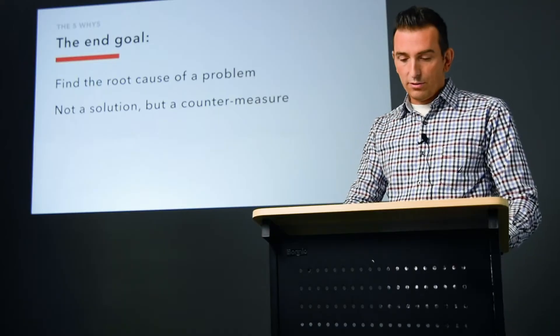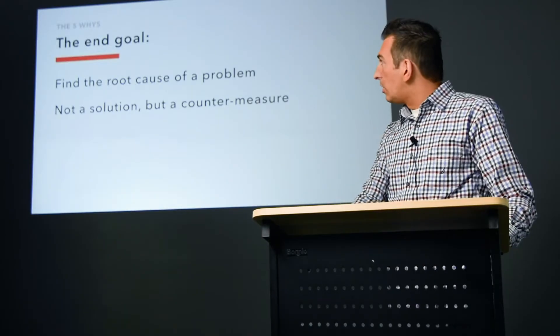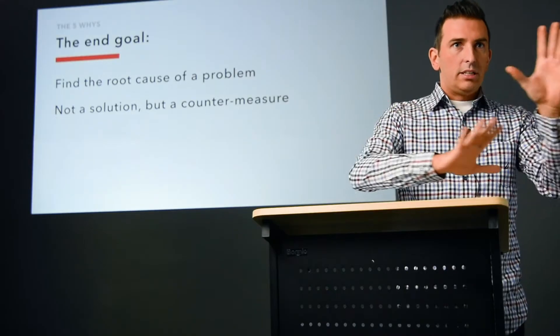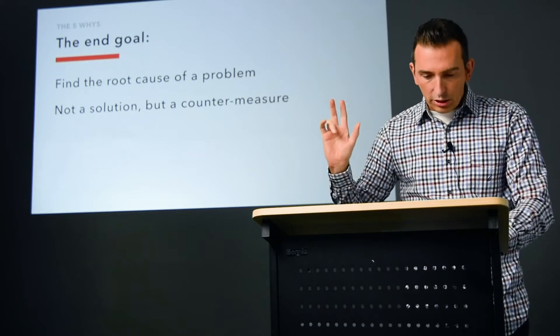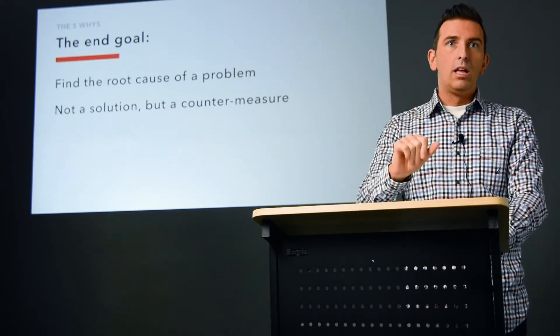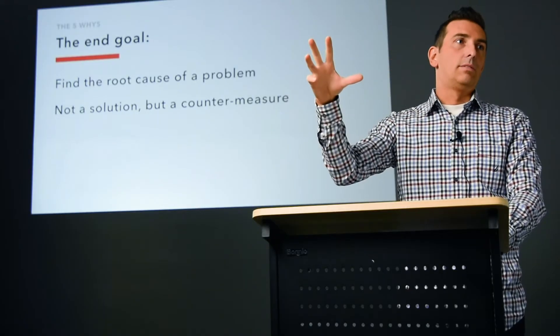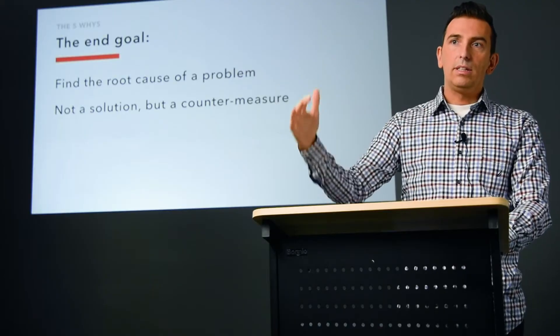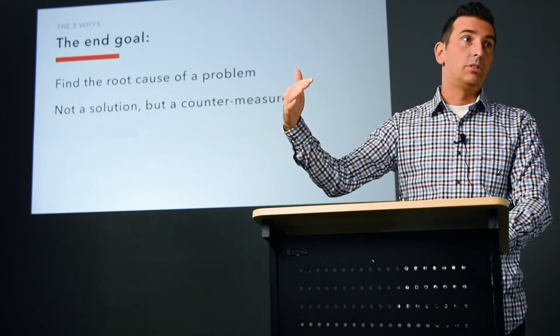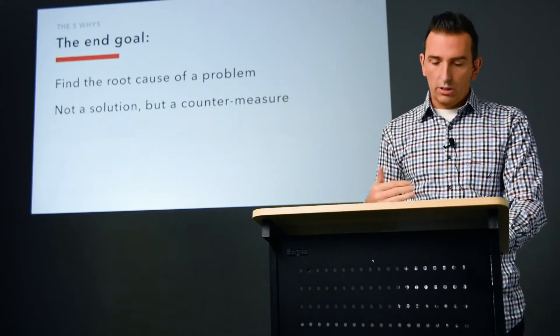The end goal is to find the root cause of the problem — and that's not necessarily going to be a person. It might be a reason or a cause why that person wasn't able to do their job, and that's something that can be addressed as part of the process. Interestingly, they make the point that it's not really a solution you're after — a solution could tend to just deal with a symptom. What we're really looking for is a countermeasure: something that will prevent that problem from happening again and really improve things over time.